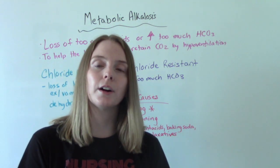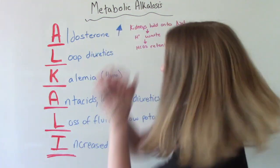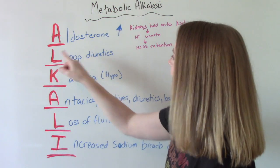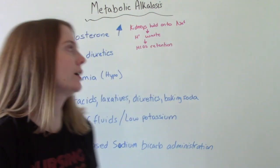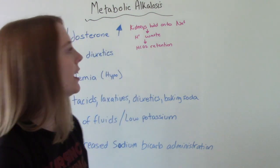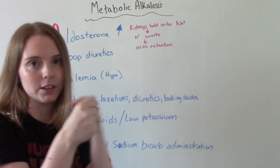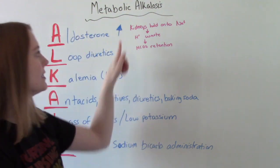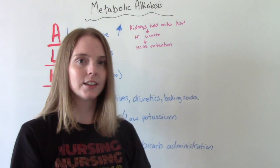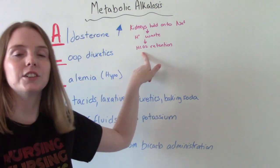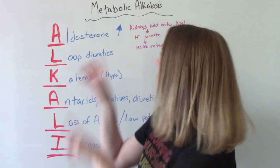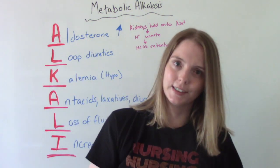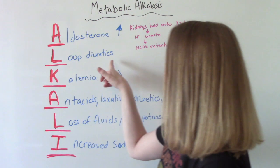Let me share a memory tool to help you remember these causes. A way you can remember the causes of metabolic alkalosis is the word ALKALI. The A is for aldosterone increase — so hyperaldosteronism. When your aldosterone is high, it causes the kidneys to hold on to salt and sodium, which causes a waste of hydrogen ions, the acids, which in turn causes HCO3 or bicarb retention. That's why hyperaldosteronism causes metabolic alkalosis. L is for loop diuretics, or the overuse of diuretics.